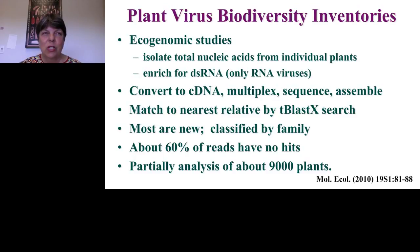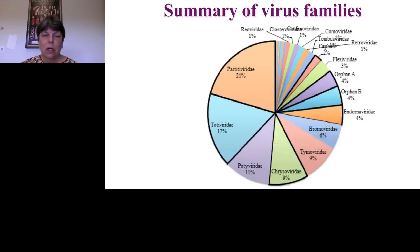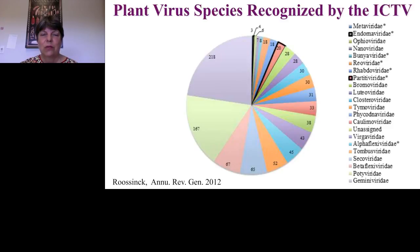Most of what we find is new. We can classify viruses by family if related to a known family, but about 60% of what we find has no similarity to any known virus family. A summary of virus families found across approximately 9,000 individual plants shows that over half fall into persistent virus families. This is a very different picture from what the International Committee for the Taxonomy of Viruses recognizes — they list only about 24 species of persistent plant viruses, and the majority of described plant viruses are acute, not persistent.